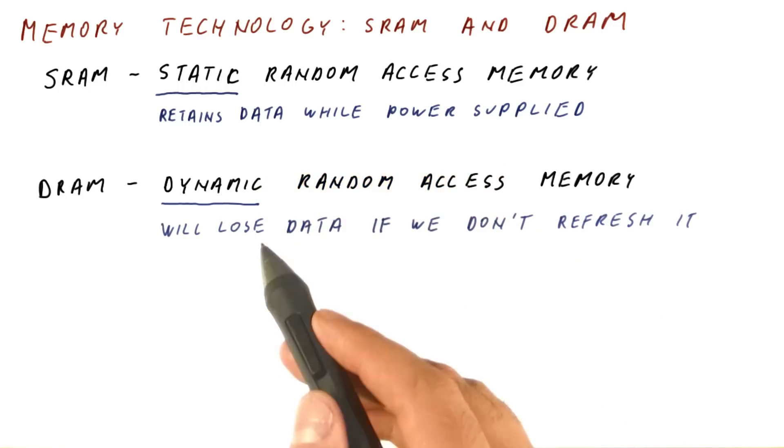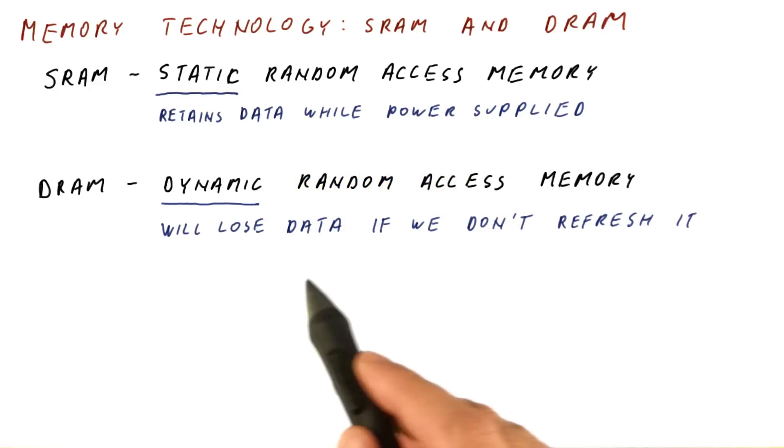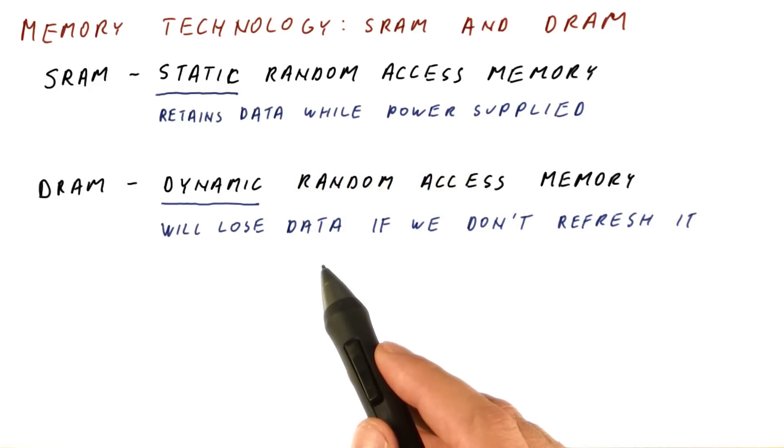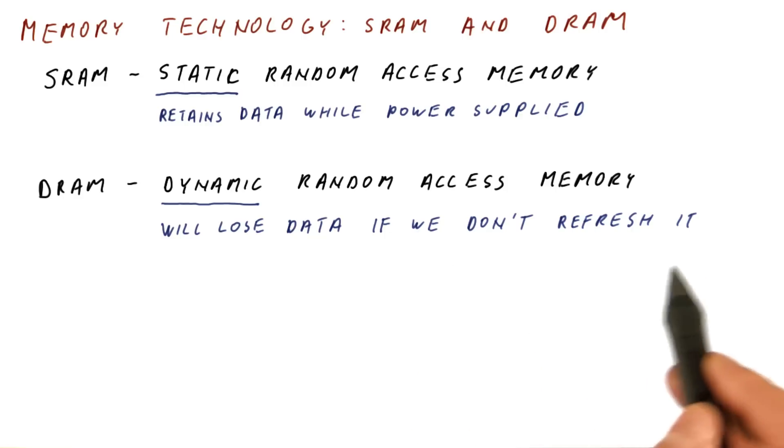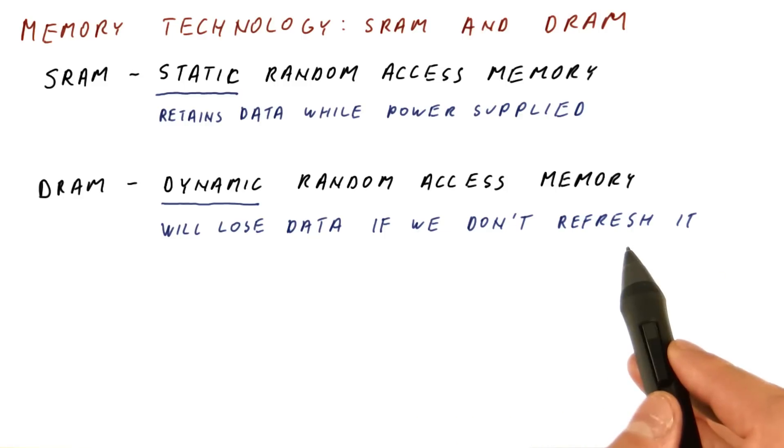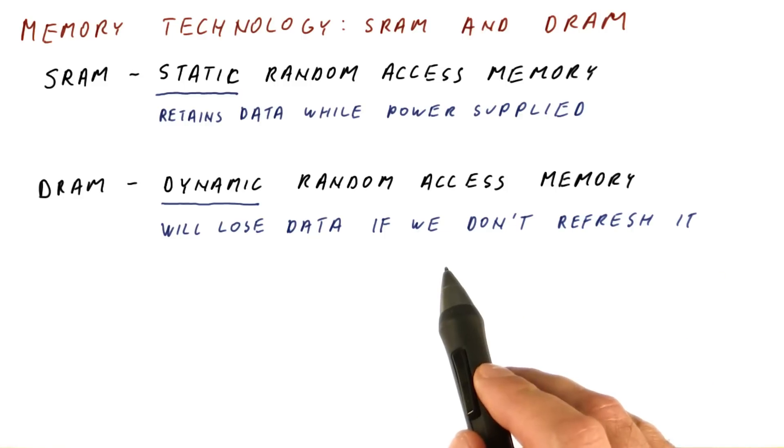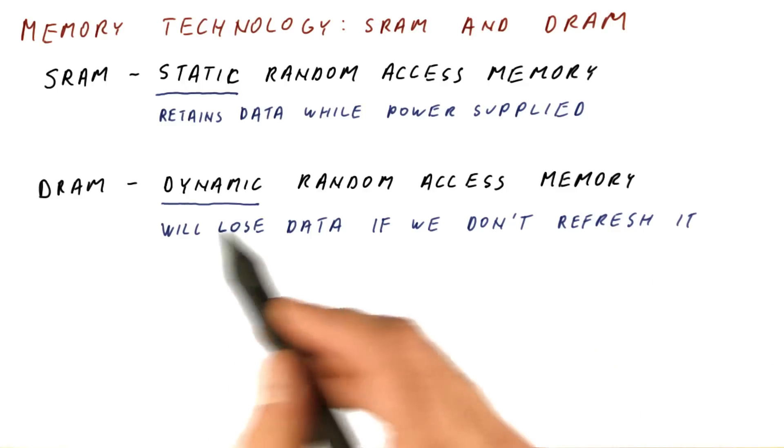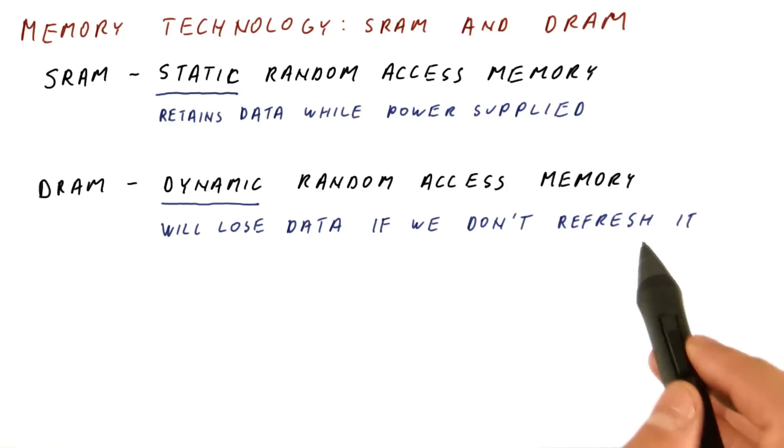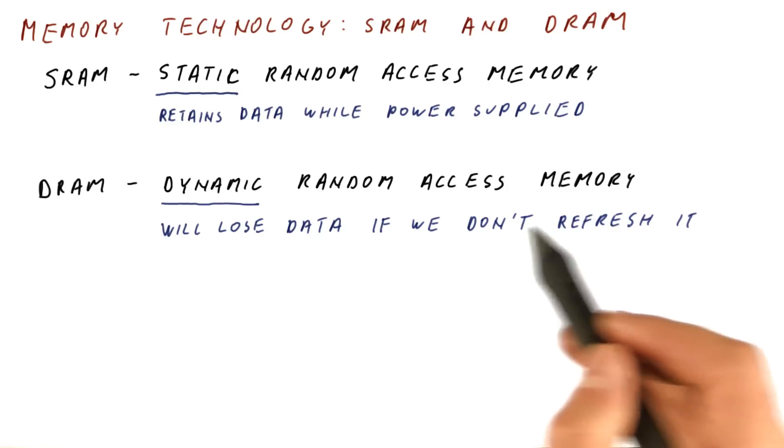Dynamic in DRAM means that it will lose data even while connected to a power source unless we refresh the data. We need to read out the data and write it back in, and keep doing that on a regular basis. Otherwise, DRAM will simply lose our data.